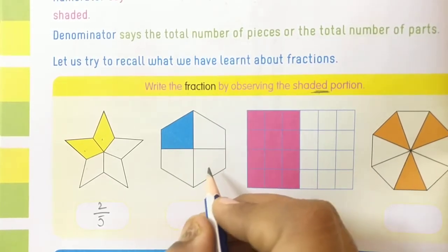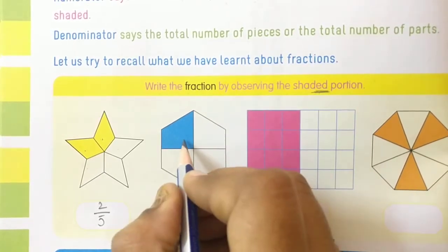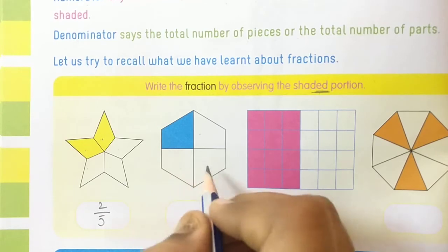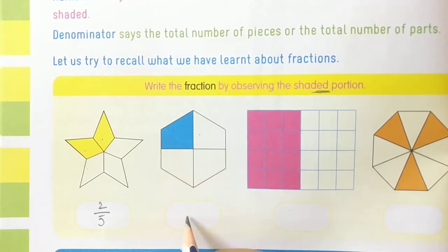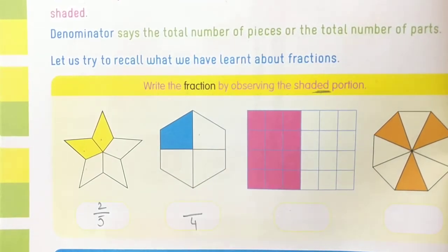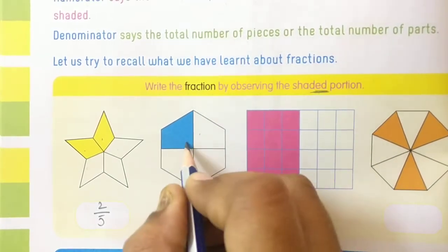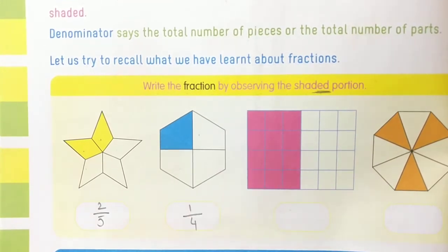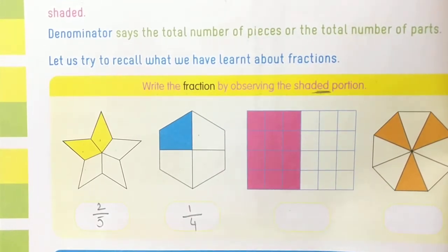Next one — how many parts do you have? One, two, three, four — so total four parts. How many parts are shaded? One — so one by four.